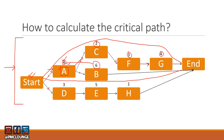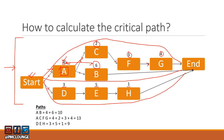Path A–B has a total duration of 10. There is also a path D → E → H to the end, with durations 3, 5, and 1, totaling 9. So the three paths are: A–B = 10, A–C–F–G = 13, and D–E–H = 9. The path with the highest duration is the critical path, so A–C–F–G with a total duration of 13 is the critical path.